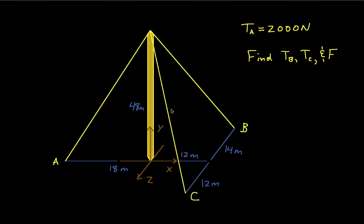I've labeled them cables A, B, and C. We'll assume we know the tension in cable A, which is 2,000 newtons, and our goal is to find the tension in cables B and C, and to find F, where F is the force that the tower is applying upwards to the point where the cables are connected. So this is primarily an example of how to solve problems in three dimensions.